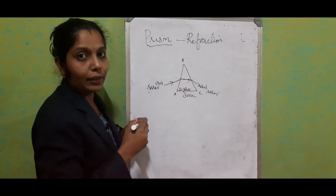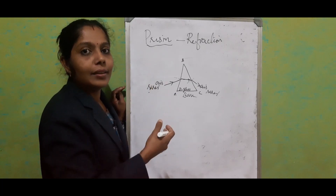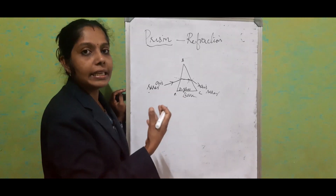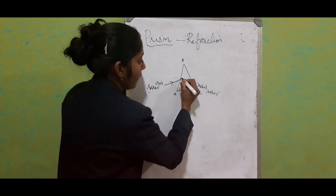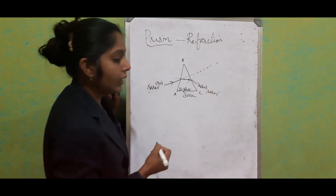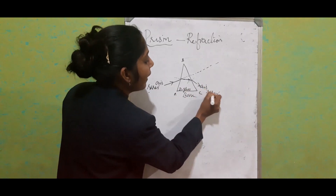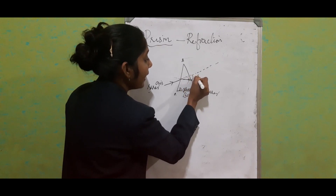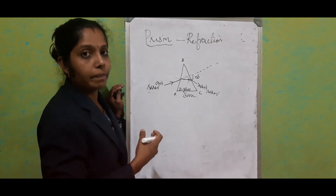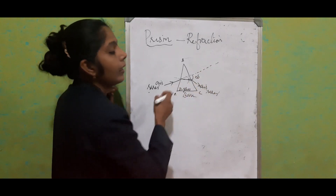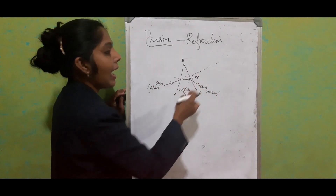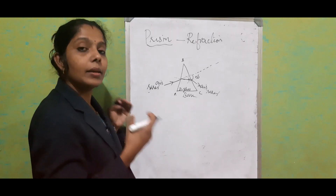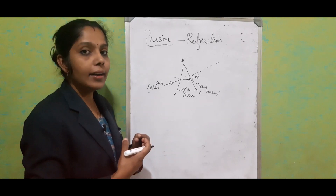This is the path of the light ray through the prism. Now comparing it to the glass slab — for the glass slab, the emergent ray and the incident ray were parallel to each other. In the case of a prism, if we extend the incident direction and the final emergent direction, there is an angular variation. This angle is known as the angle of deviation — there is an angle change between the incident ray direction and the emergent ray.